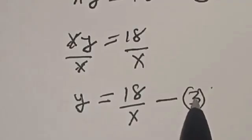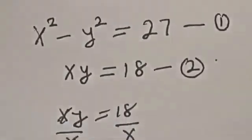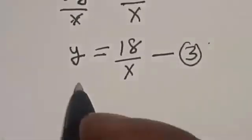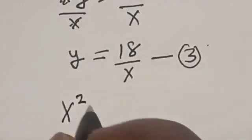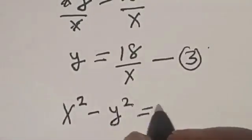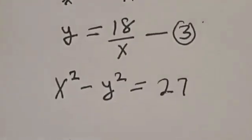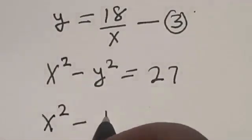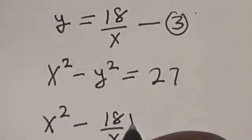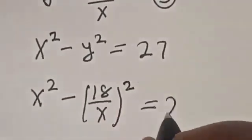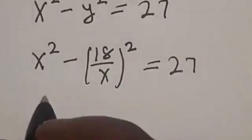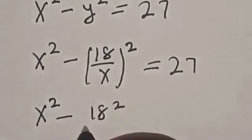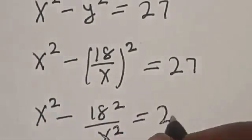Now substitute equation 3 into equation 1. That is, anywhere you see y, put 18 divided by x. So equation 1 becomes: x squared minus (18 divided by x) squared is equal to 27.